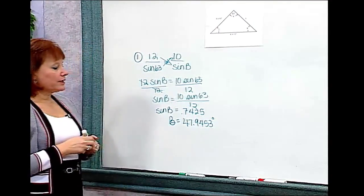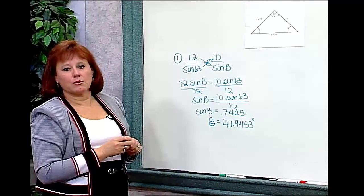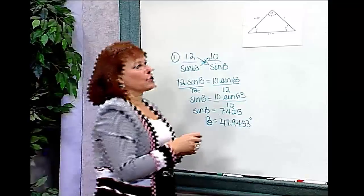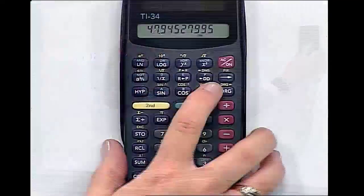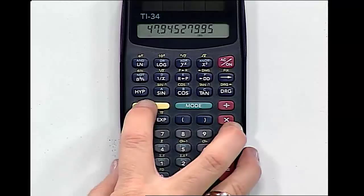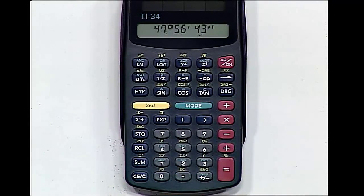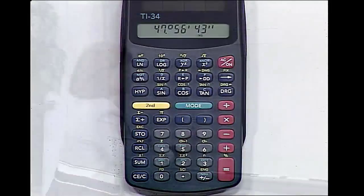We don't usually leave answers as decimals when working with degrees — we convert to degrees, minutes, and seconds. Using the degree-minute-second button on the calculator (a second function), we find that 47.9453 degrees equals 47 degrees, 56 minutes, and 43 seconds, which we round up to 47 degrees and 57 minutes.